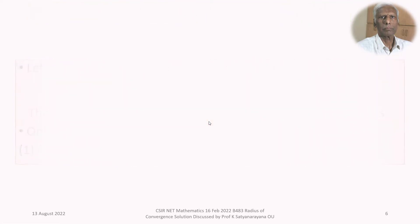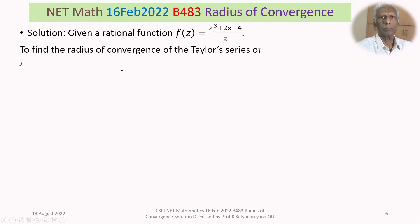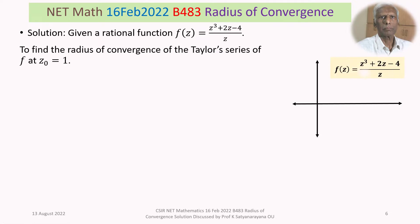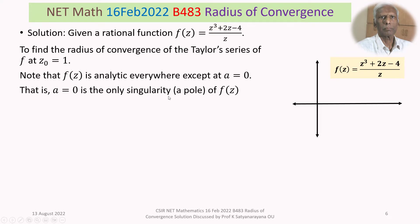That is our function f(z). We are given a rational function f(z) = (z³ + 2z − 4) / z. We want to find the radius of convergence of the Taylor series of f about z₀ = 1. Note that f(z) is analytic everywhere except at z = 0, so z = 0 is the only singularity — in this case it is a pole of f(z).